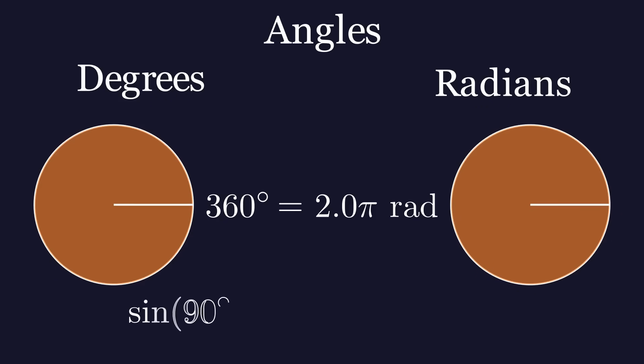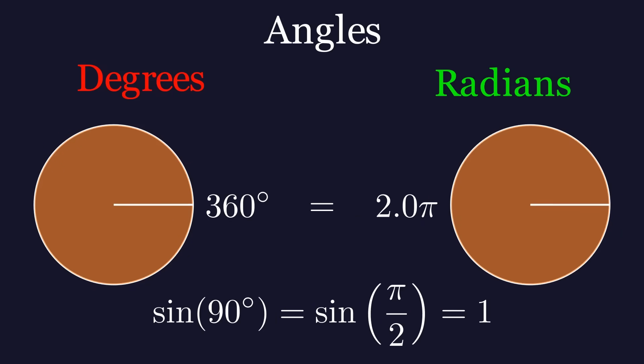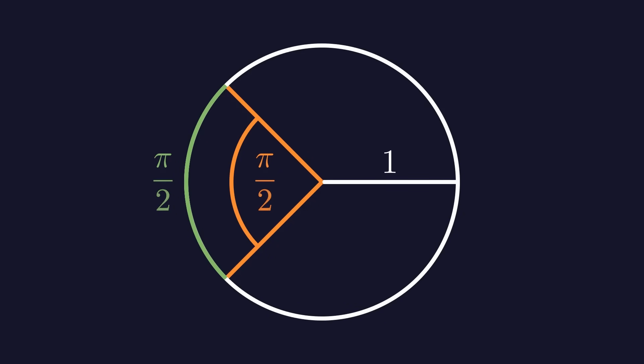For example, sine of 90 degrees is equal to sine of pi over 2 radians, which is equal to 1. In fields like calculus and advanced mathematics, angles are usually measured in radians, not degrees, and we usually don't write 'rad' for radians. So if an angle is written without a unit, we assume it is in radians. Radians are easier to use because when we have a circle of radius equal to 1, the length of an arc is equal to the angle it subtends measured in radians.